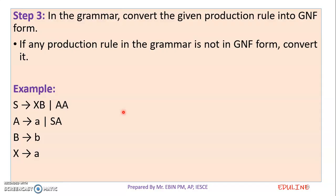We will learn how to convert the rules in a context-free grammar to Greibach Normal Form. Here are examples: S tends to XB, S tends to AA, A tends to a, A tends to SA, B tends to b, and X tends to a.